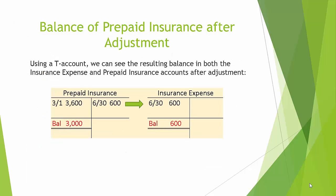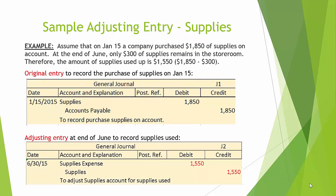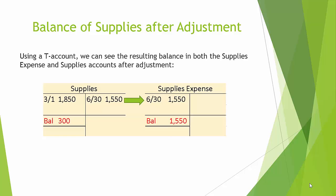After the adjustment, the balance in prepaid insurance is $3,000 and the balance in insurance expense is $600. Here is a sample adjusting entry for supplies. Assume that on January 15, a company purchased $1,850 of supplies on account. At the end of June, only $300 of supplies remains in the storeroom. Therefore, the amount of supplies used up is $1,550 ($1,850 minus $300). The original entry debited supplies $1,850 and credited accounts payable $1,850. The adjusting entry at the end of June would debit supplies expense $1,550 and credit supplies $1,550. After adjustment, the balance in the supplies account is $300.